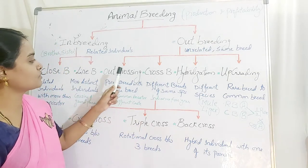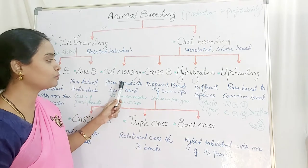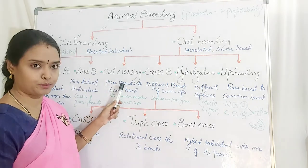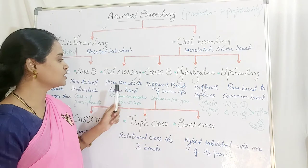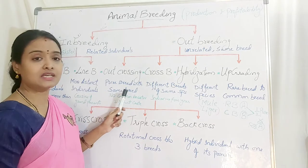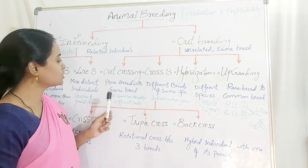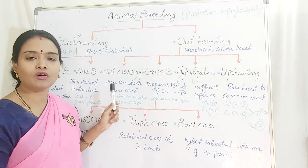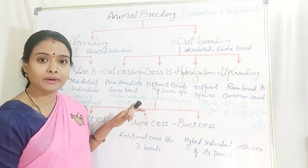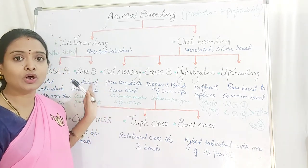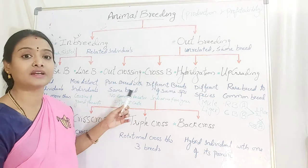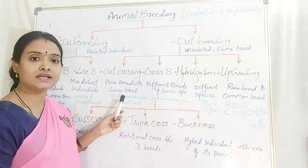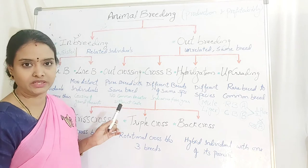In outbreeding via outcrossing, both individuals are pure breeds of the same breed but belong to different castes or different religion, where their ancestors are not common.